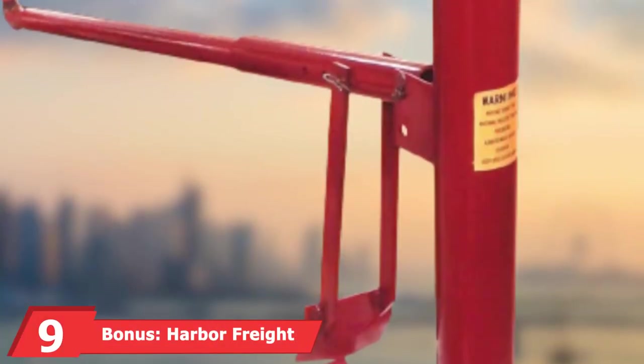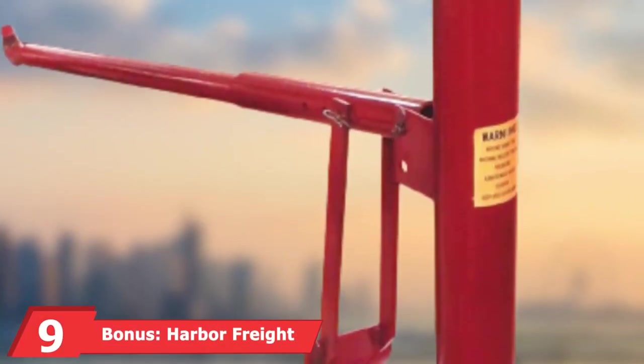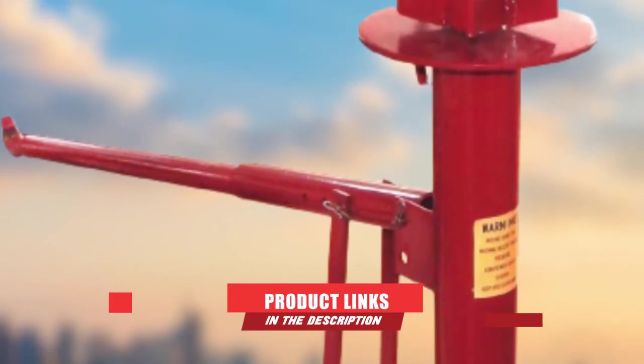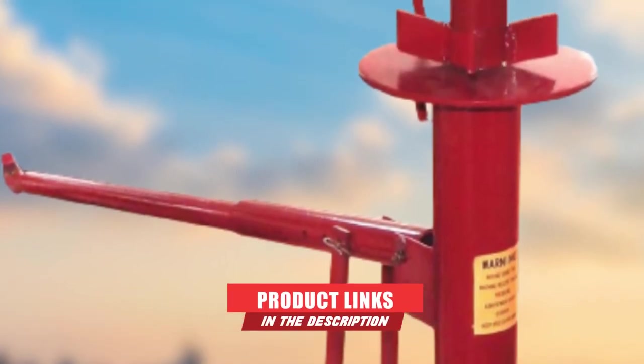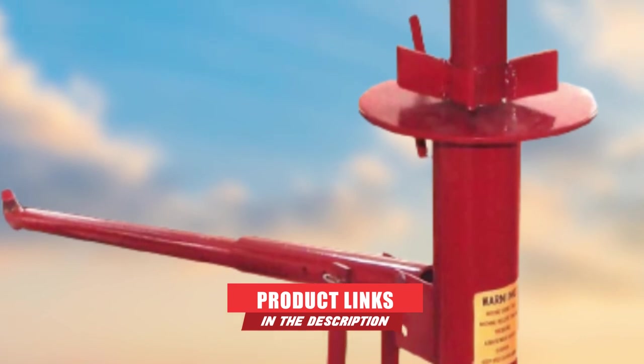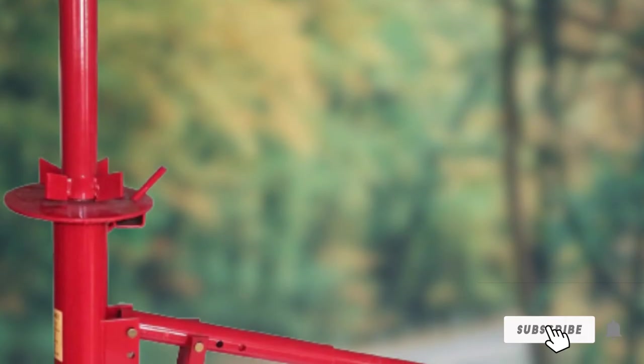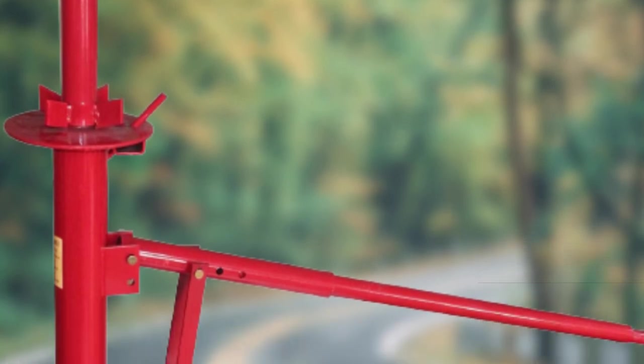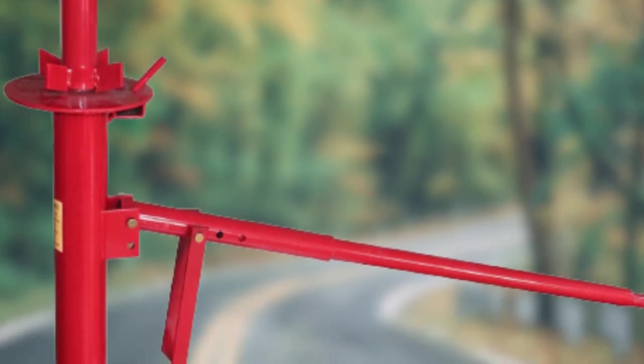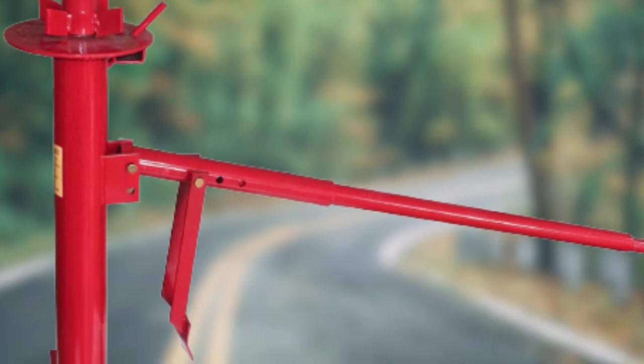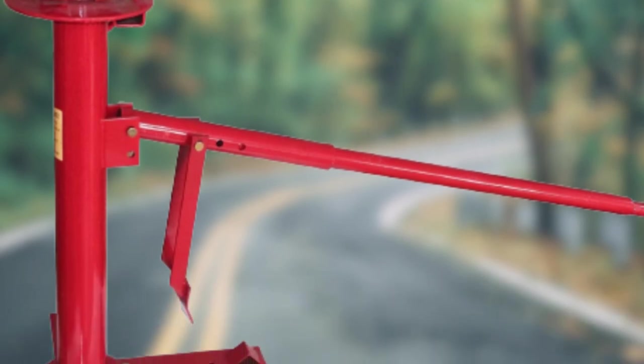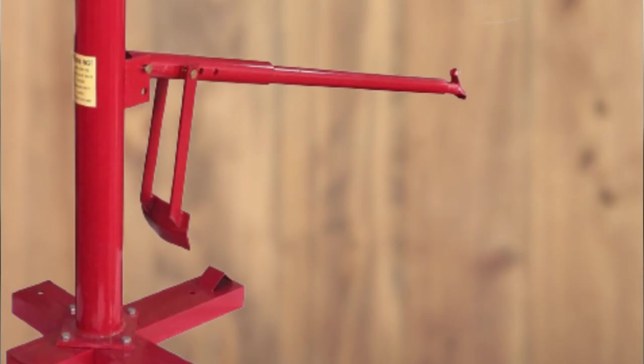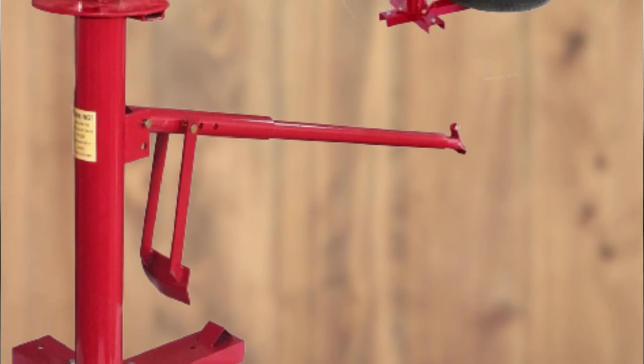Next at number 9 we have Bonus, Harbor Freight Pittsburgh Automotive Manual Tire Changer. This bonus item is a cheap alternative available from Harbor Freight. With a very low price tag, this manual tire changer is a great addition to any garage. It works well for motorcycles in particular, providing that you make some of your own modifications. That's why this one is only added as a bonus, it needs some mods to work well. It is very cheap though, so any shortcomings are easily outweighed by the product's price tag.